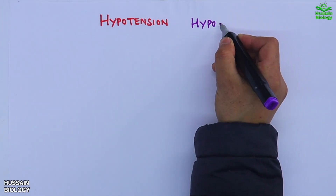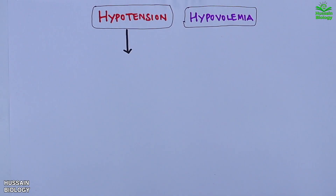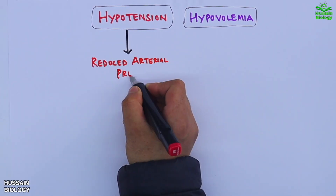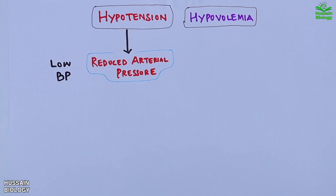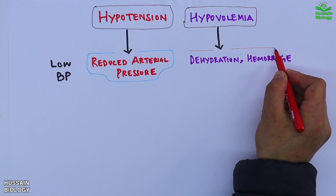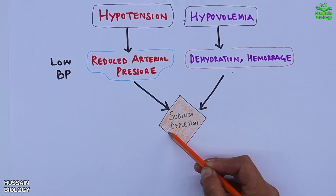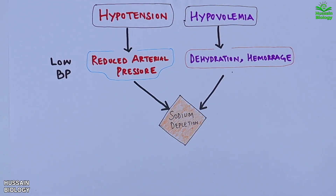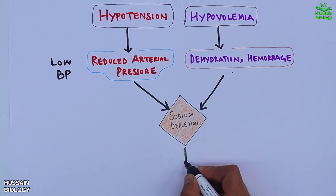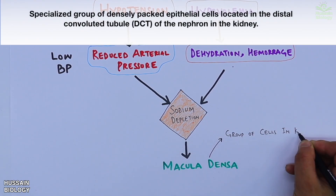There are two important factors that trigger the RAS: hypotension and hypovolemia. Hypotension leads to reduced arterial pressure, that's low BP, whereas hypovolemia leads to dehydration and hemorrhage. Both events drive sodium depletion.